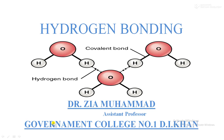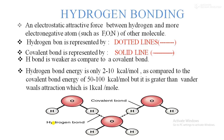Assalamu alaikum dear students, today our topic is about hydrogen bonding. Hydrogen bonding is actually an electrostatic force of attraction between hydrogen and more electronegative atoms such as fluorine, oxygen, and nitrogen of other molecules. Hydrogen bonding is represented by a dotted line, while a covalent bond is represented by a solid line.